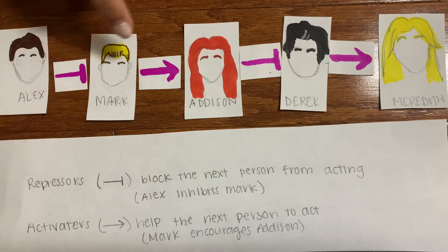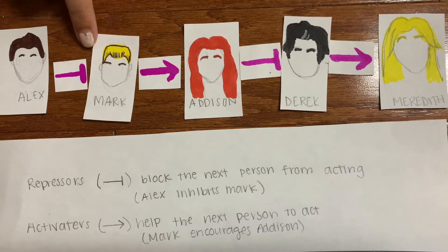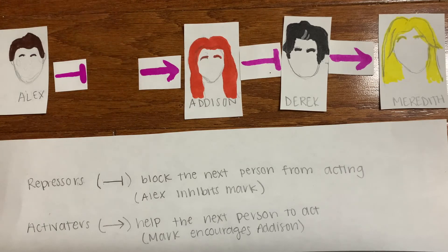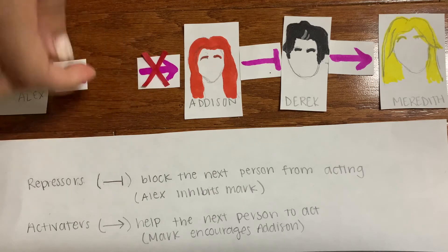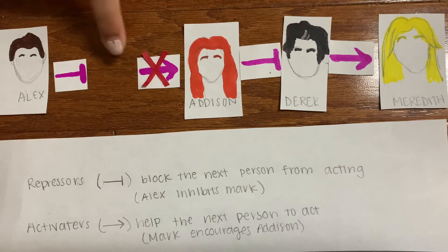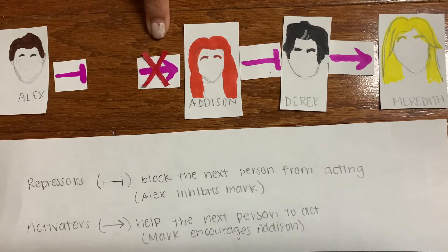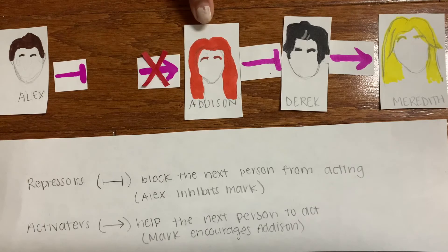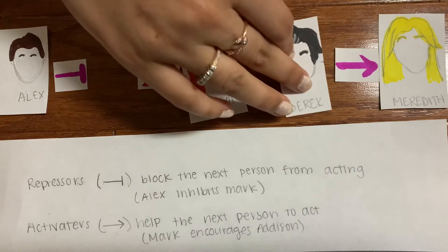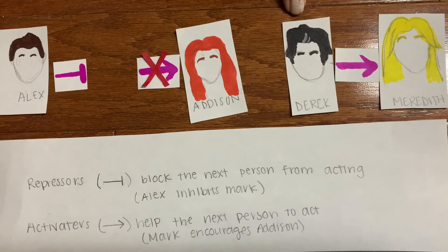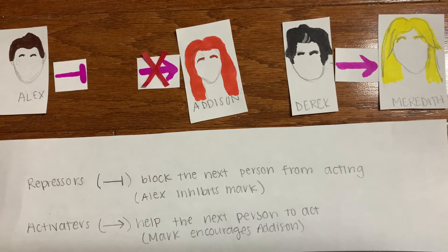Instead, if we have a mutation in the Mark gene product, the Mark gene product cannot activate Addison, and therefore Addison cannot inhibit the Derrick gene product, and Derrick can activate Meredith. So the Meredith gene product is transcribed.